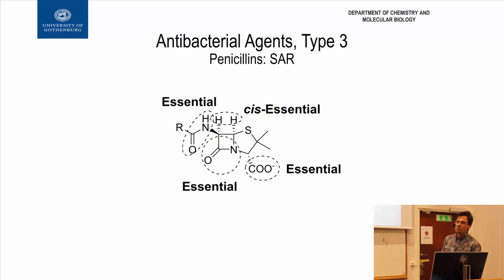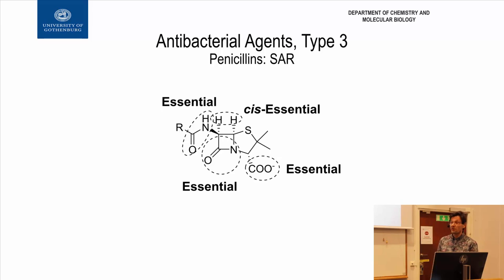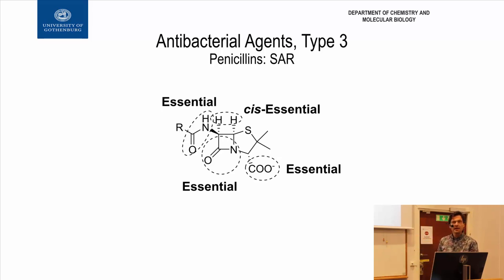Using one of them as an example: I've written out four functional groups, and most of them are described as essential — meaning if I make any change in those positions, the activity goes down. I've killed the drug. With this structure, it looks like I can hardly make any changes at all, because the activity will go down or vanish completely.